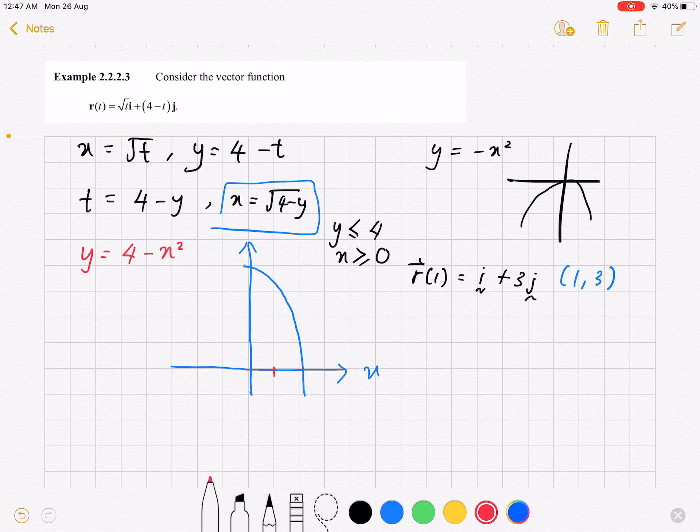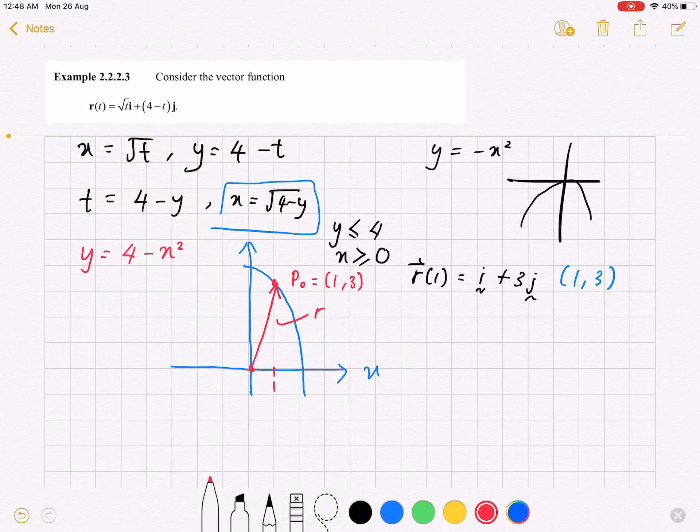Remember, what you have to do is just find the coordinate 1, 3 based on the position vector. So where is 1, 3? Obviously, this is 1. And I believe that this is the coordinate P0, which is 1, 3. So we'll have a vector from the origin to the point. This one will be the position vector r(1).